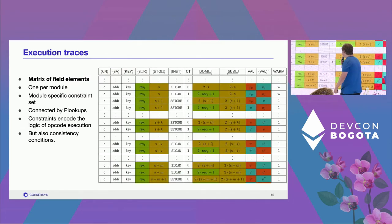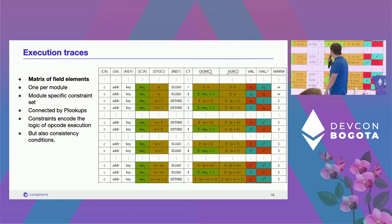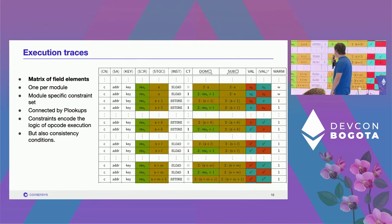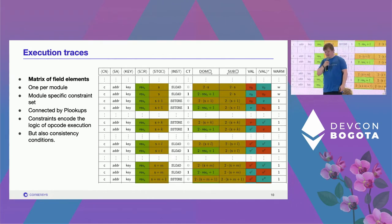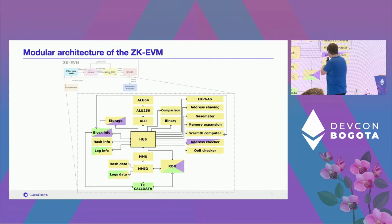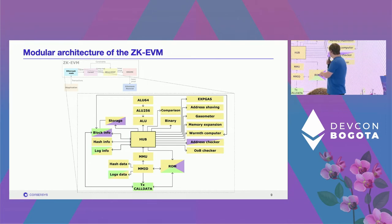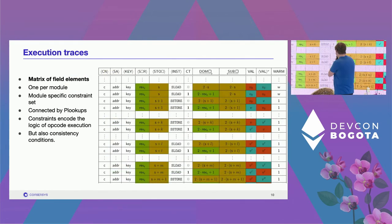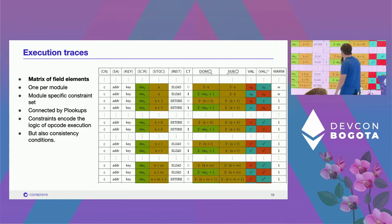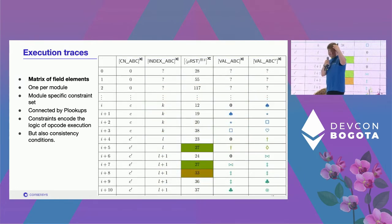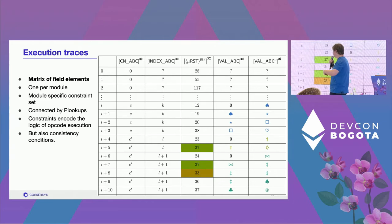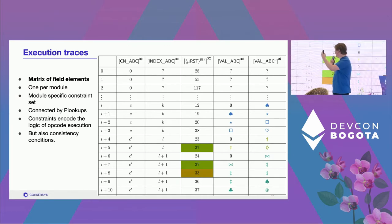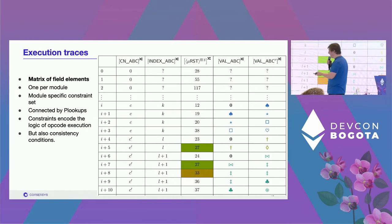When you run the ZKEVM, you get traces — large matrices containing data represented as field elements. There's one trace per module, and each trace obeys its own internal constraint system. The arrows between modules represent lookup connections, allowing data to be transported from one place to another. There are also global consistency constraints ranging over the entirety of a block rather than just two or three consecutive rows — for instance, when you re-enter an execution context and load something from RAM, you get what you last put there.